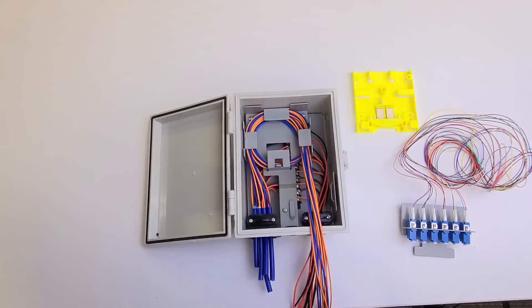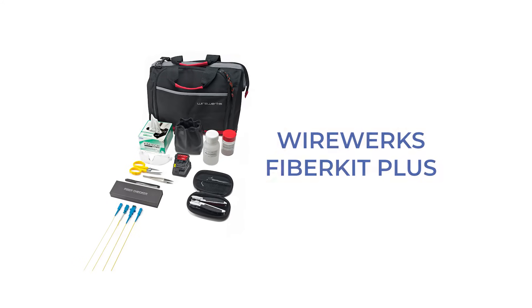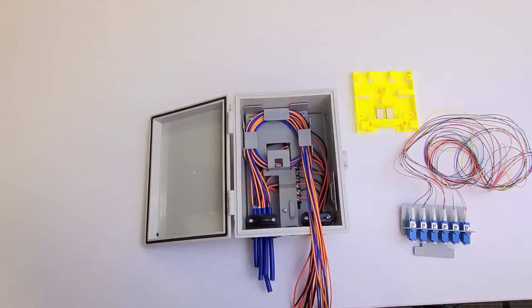Next, make a mark approximately three inches and remove the outer jacket, exposing the inner buffer layers in preparation for fusion splicing using our mini splice tray. To effectively perform a fusion splice, it's required to have the proper tools such as the Wireworks fiber kit plus. Please follow the steps outlined in our mini splice tray installation video.